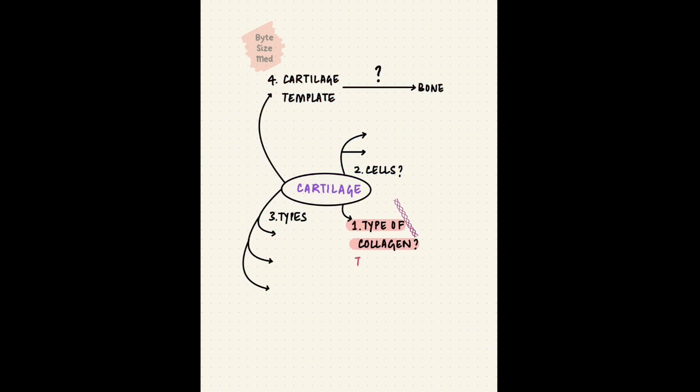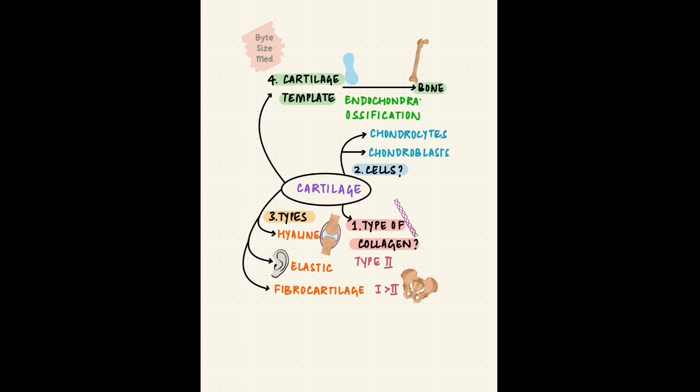Cartilage predominantly has type 2 collagen, except for fibrocartilage, which mainly has type 1. This collagen is synthesized by chondroblasts. The other important cell is the chondrocyte. The three types of cartilage are hyaline, elastic, and fibrocartilage. Bones develop by a process called ossification. And when that happens from a cartilaginous template, it's called endochondral ossification.